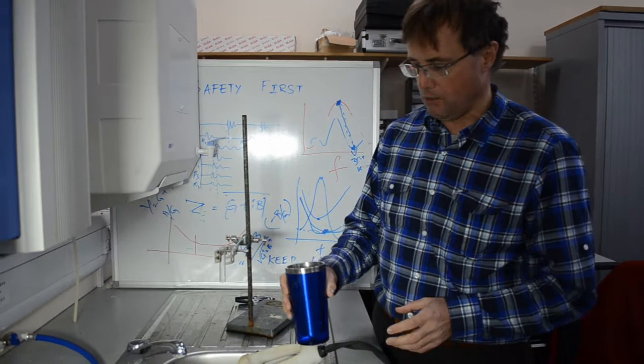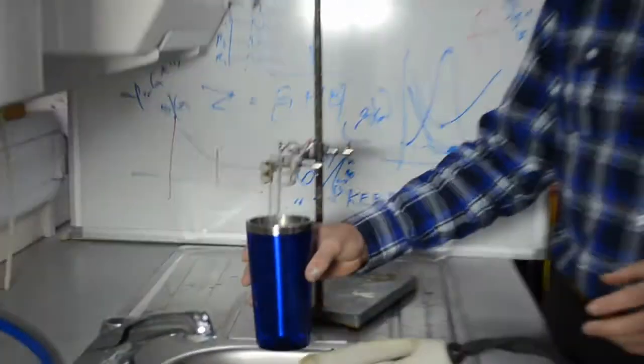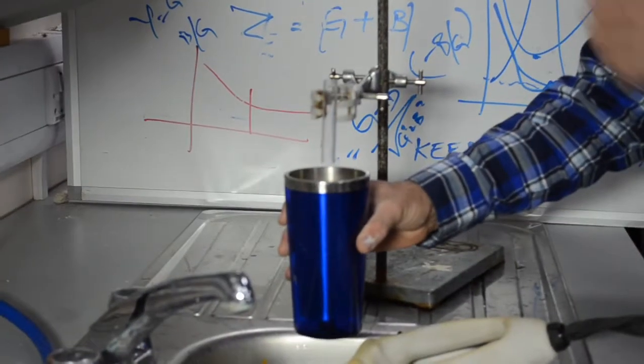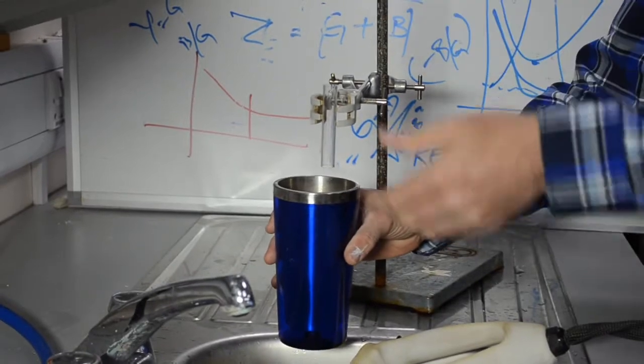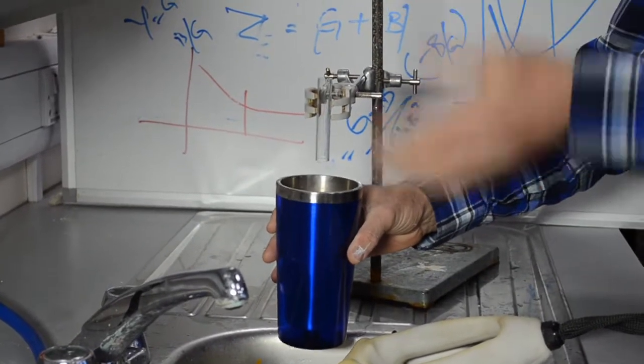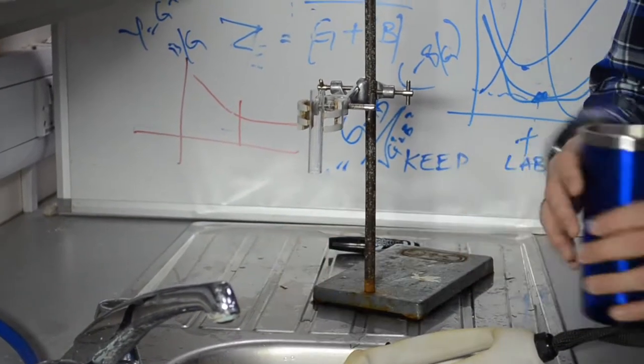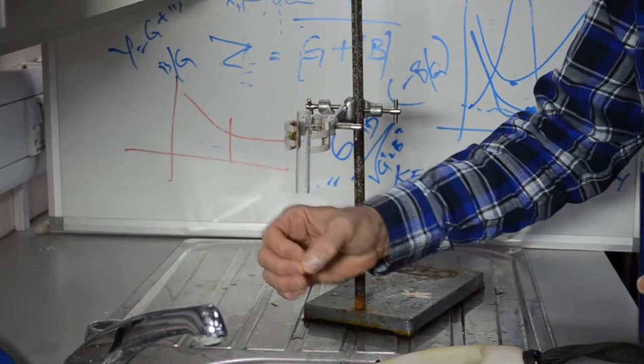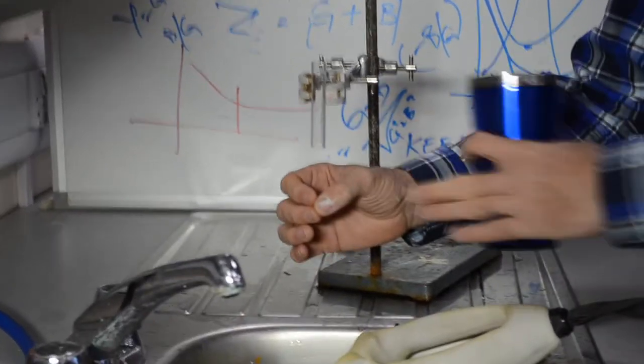So in a drinks dispenser, you'll go up with your cup, go underneath the tube, press a button, and out will come the drink product—some sugary drink perhaps. Or if it's in a factory, the yogurt cartons might come through and have the product put into them.